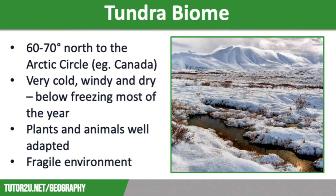Moving on to the tundra, a biome that many will have studied as part of the optional cold environments topic. The tundra lies about 60 to 70 degrees north to the Arctic Circle in northern Europe and Canada. This biome experiences very cold, windy and dry conditions and is below freezing for much of the year, because of the angle of solar radiation meaning the sun's rays are spread out over a large area. The land is frozen for much of the year, and when it is not frozen, the surface ice thaws, leading to waterlogging. Plants are low growing to withstand the wind and retain heat and moisture. The tundra is fragile and is threatened by oil and mineral exploration, as well as tourism.